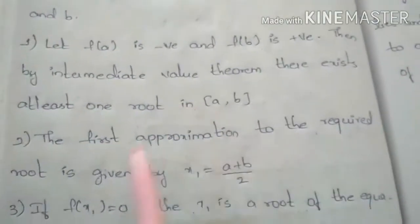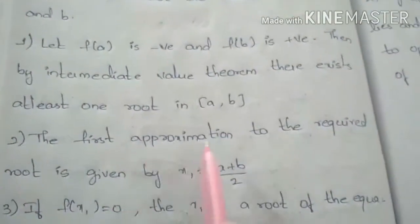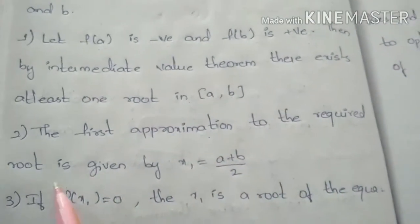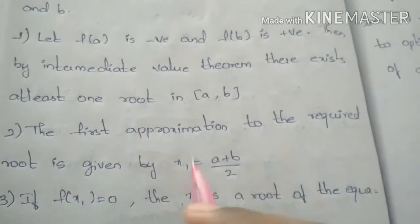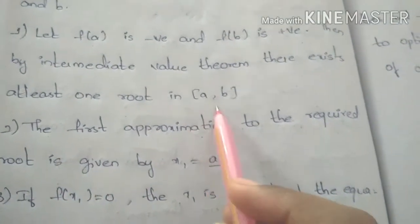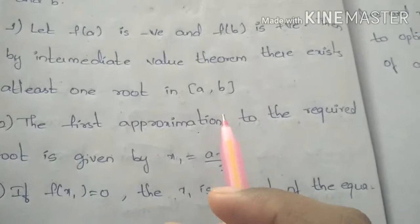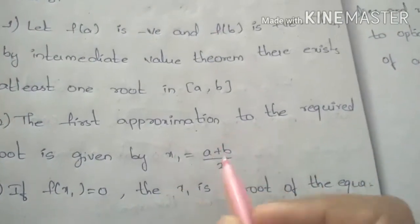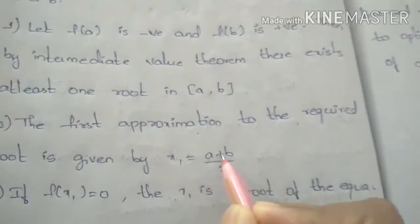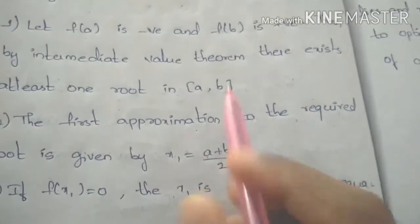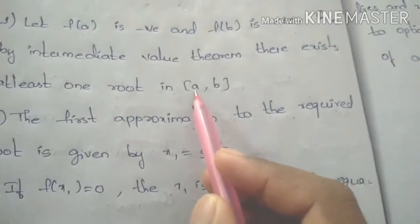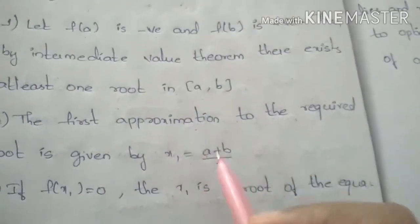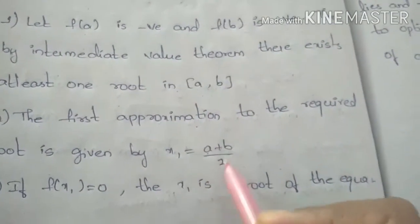The first approximation to the required root is given as x1, which is equal to a plus b divided by 2. The interval is [a, b] and the average value is a plus b by 2.